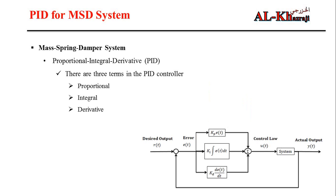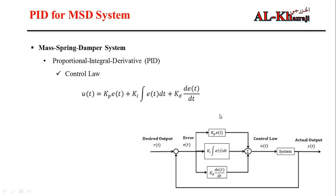We will design a PID controller to improve the performance of the mass spring damper. As a quick recap: a PID controller has three terms — P (proportional), I (integral), and D (derivative). The control law is: u = Kp × error + Ki × integral of error + Kd × derivative of error, where the error is the difference between the actual output and the desired output.